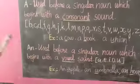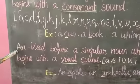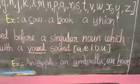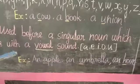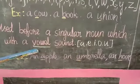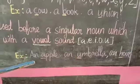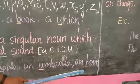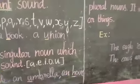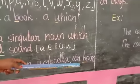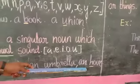Next, An. An is used before a singular noun which begins with a vowel sound. Examples: an apple, an umbrella, an hour. Look at this word. Here, H is silent. We shouldn't say a hour, we say an hour.